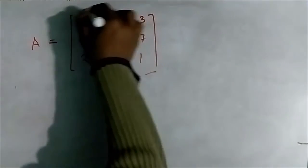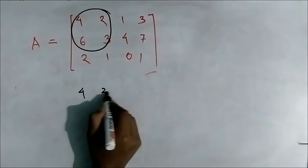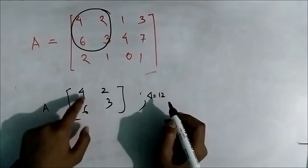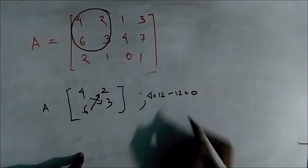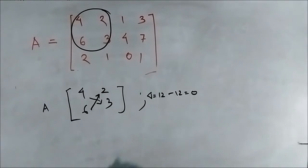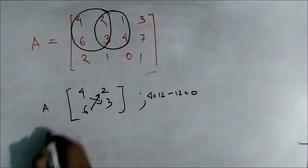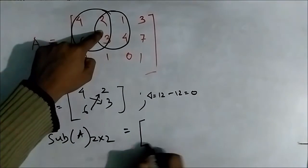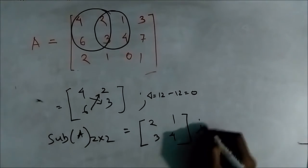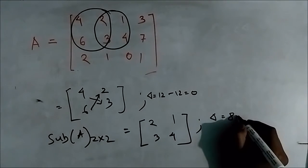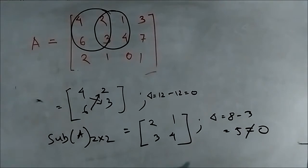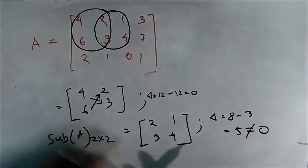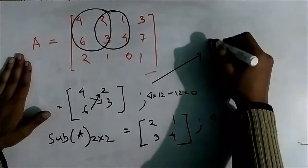Let's check a square submatrix of order 2. First, consider the submatrix: 4, 6 / 2, 3. The determinant is 4×3 − 6×2 = 12 − 12 = 0. So let's check another 2×2 submatrix: 2, 1 / 3, 4. The determinant is 2×4 − 3×1 = 8 − 3 = 5, which is not equal to 0. We have found a square submatrix of order 2×2 whose determinant is not equal to 0, so the rank of this matrix A is 2.